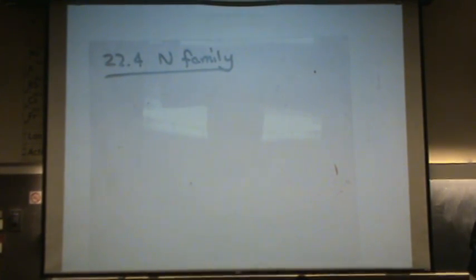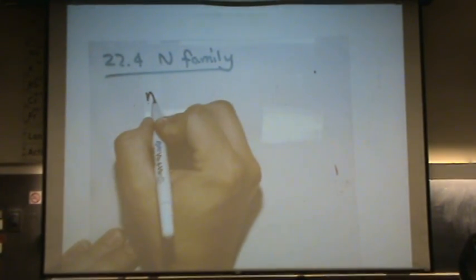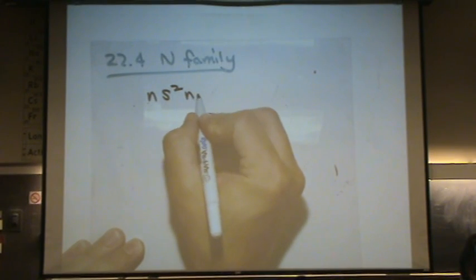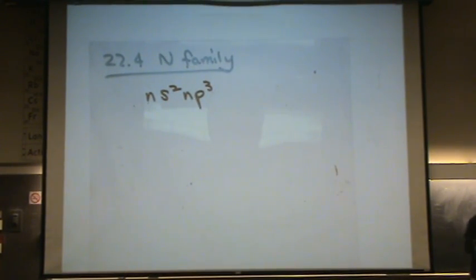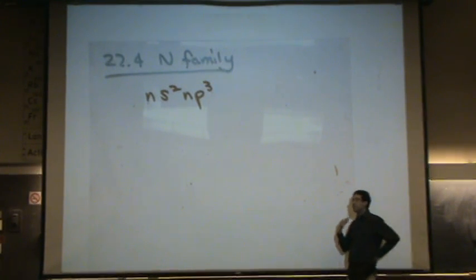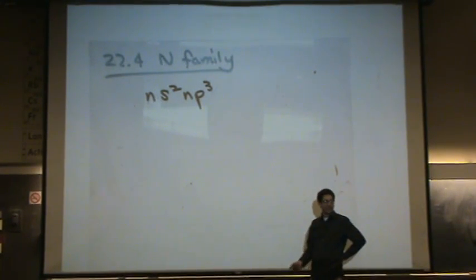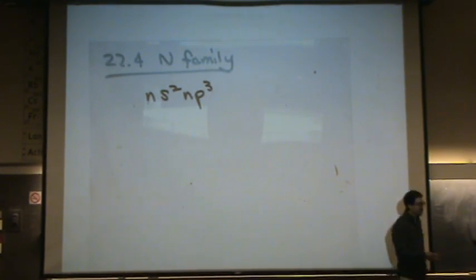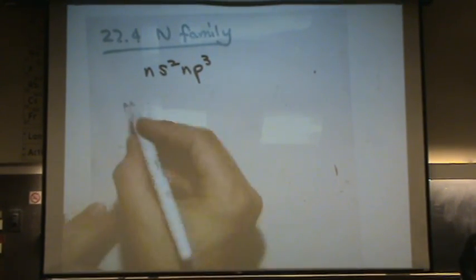Nitrogen is weird in that this family is ns²np³ for its electronic configuration. Nitrogen is interesting because it can have multiple oxidation states. It can form a lot of different compounds with a lot of different oxidation states.